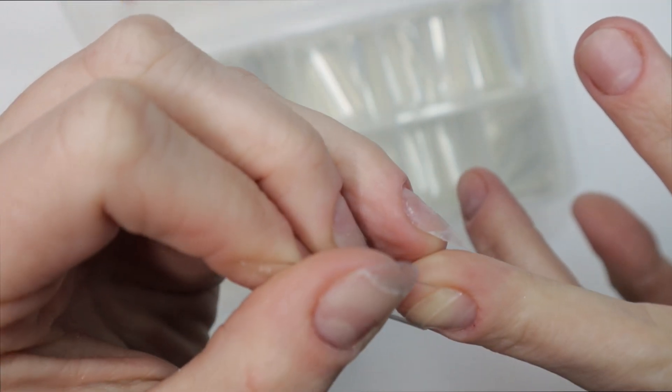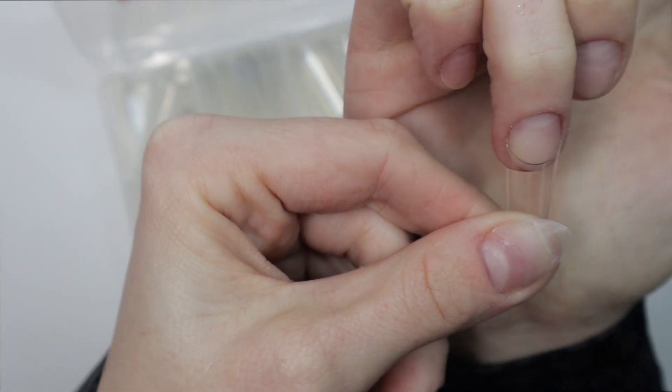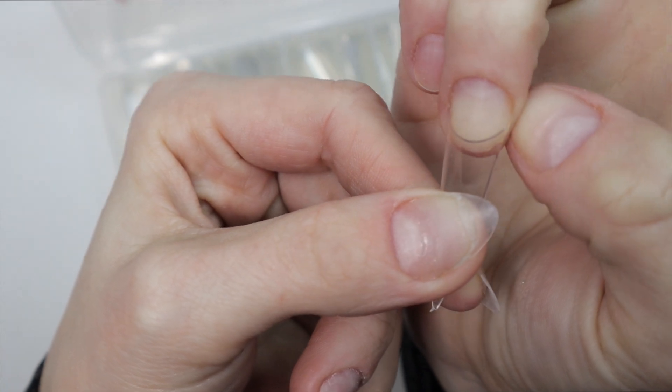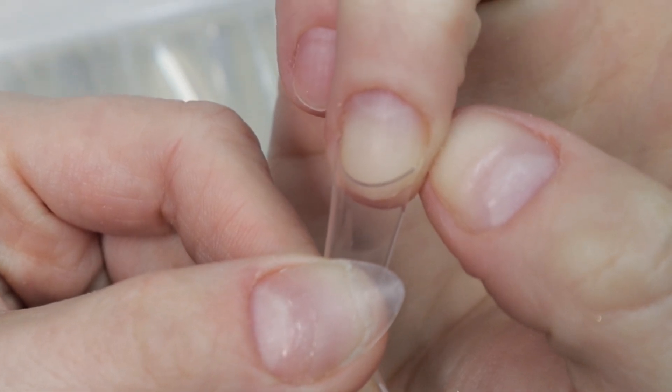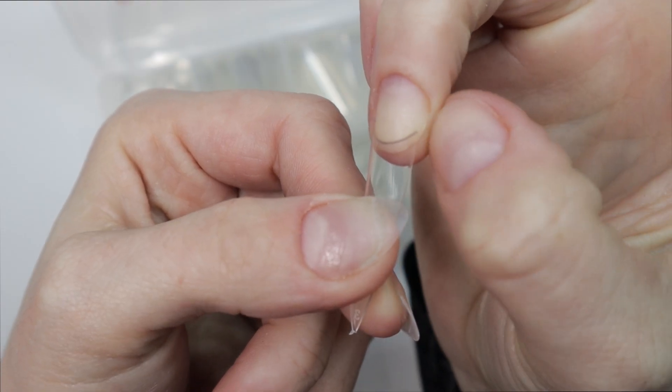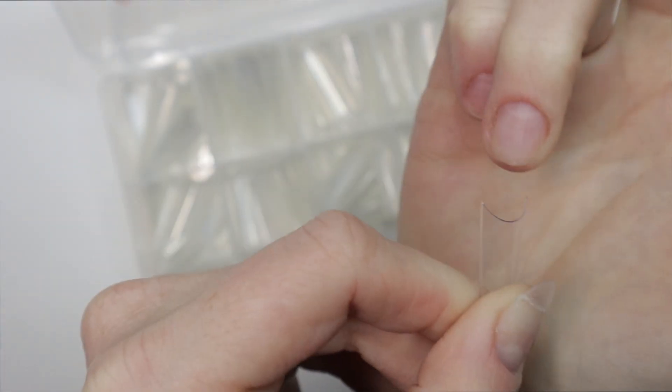I'm going to show you in just a second what it looks like when a tip doesn't fit. So you can see here that I picked a tip that was just a tiny bit too small for my nails. It does not fit properly and it doesn't cover my right sidewall.